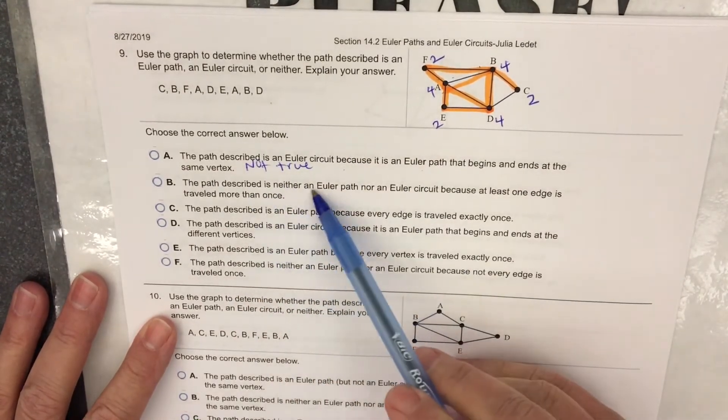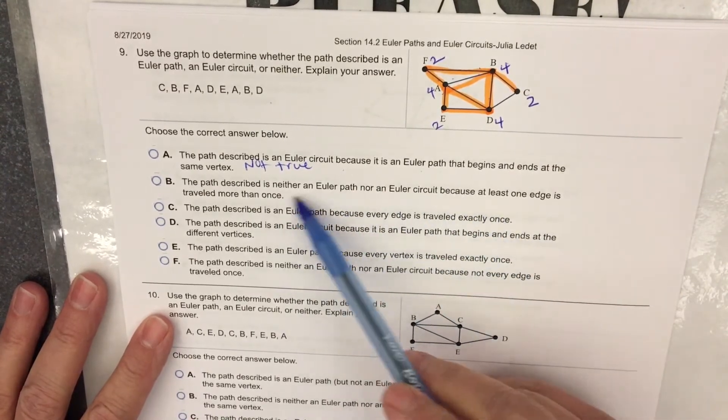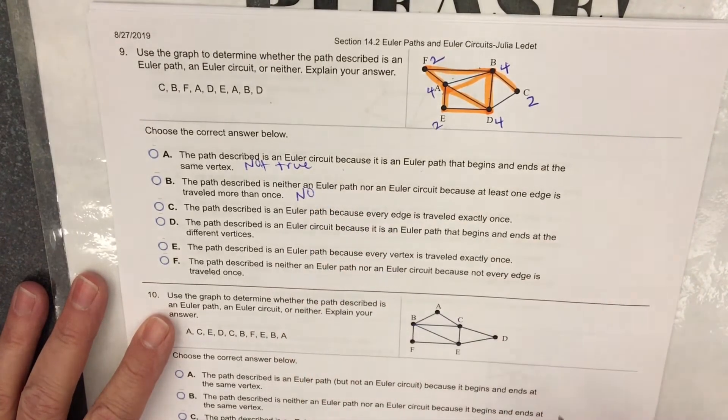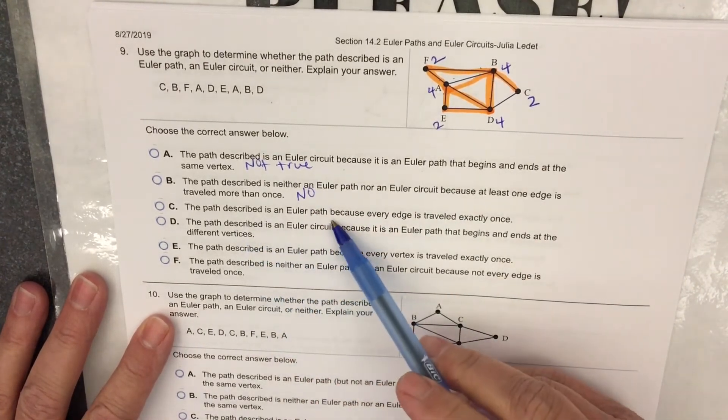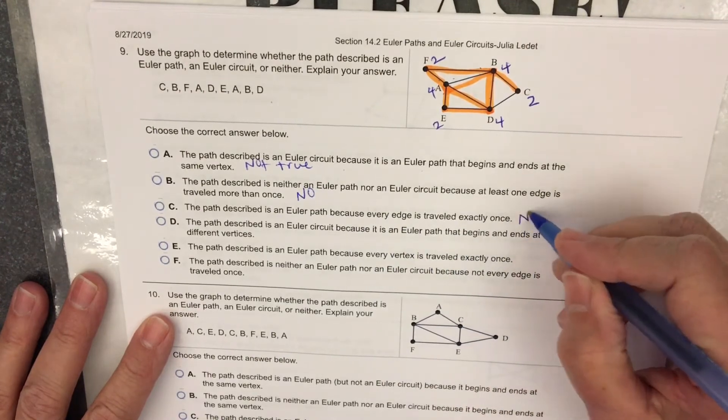The path described is neither an Euler path nor an Euler circuit because at least one edge is traveled more than once. No, that didn't happen. The path described is an Euler path because every edge is traveled exactly once. That did not happen.